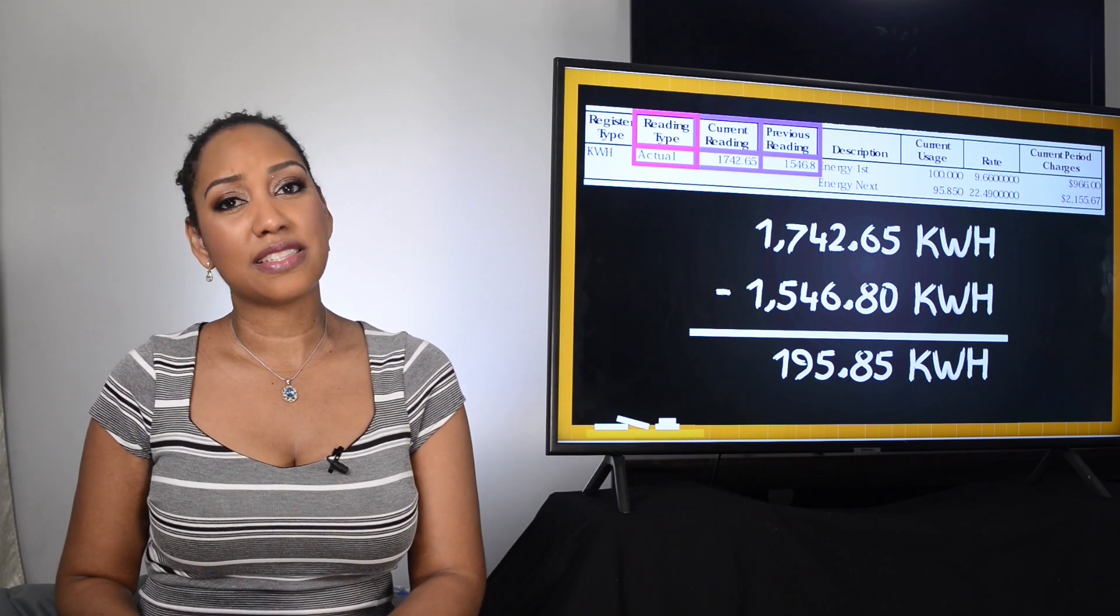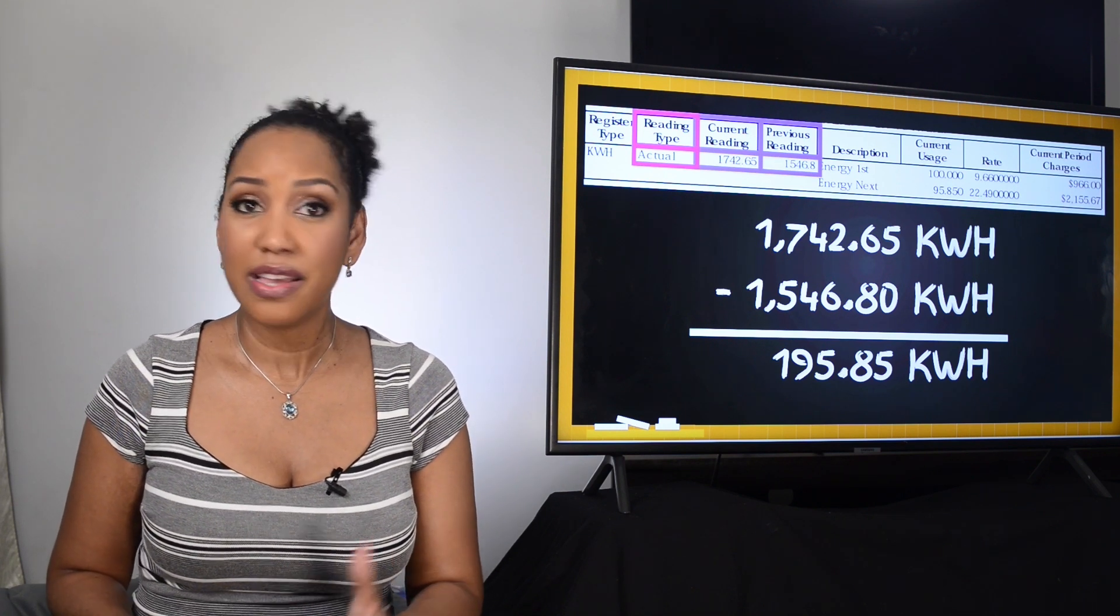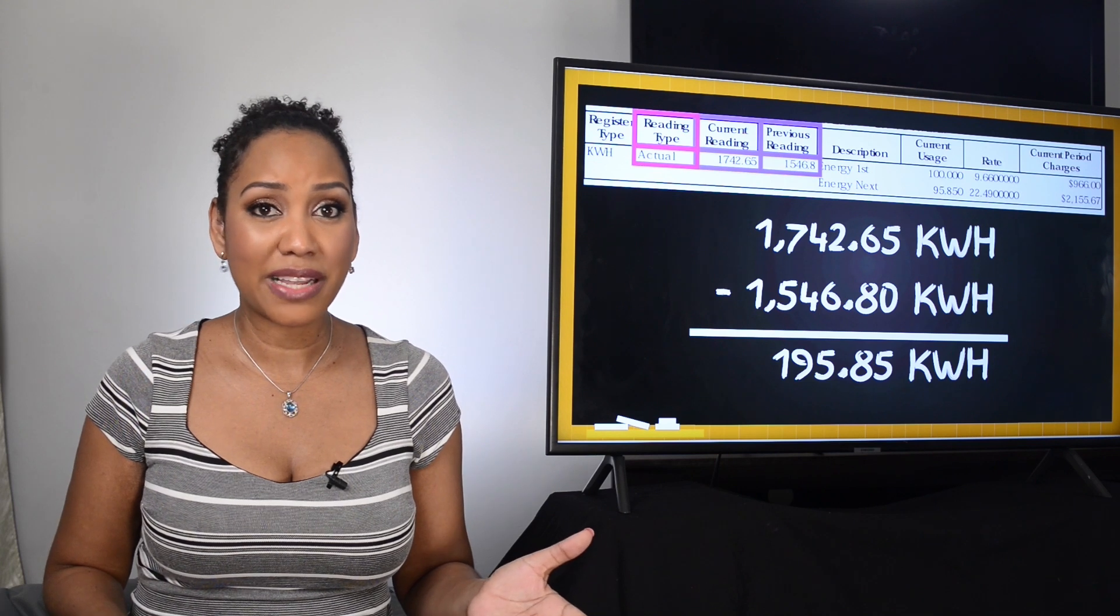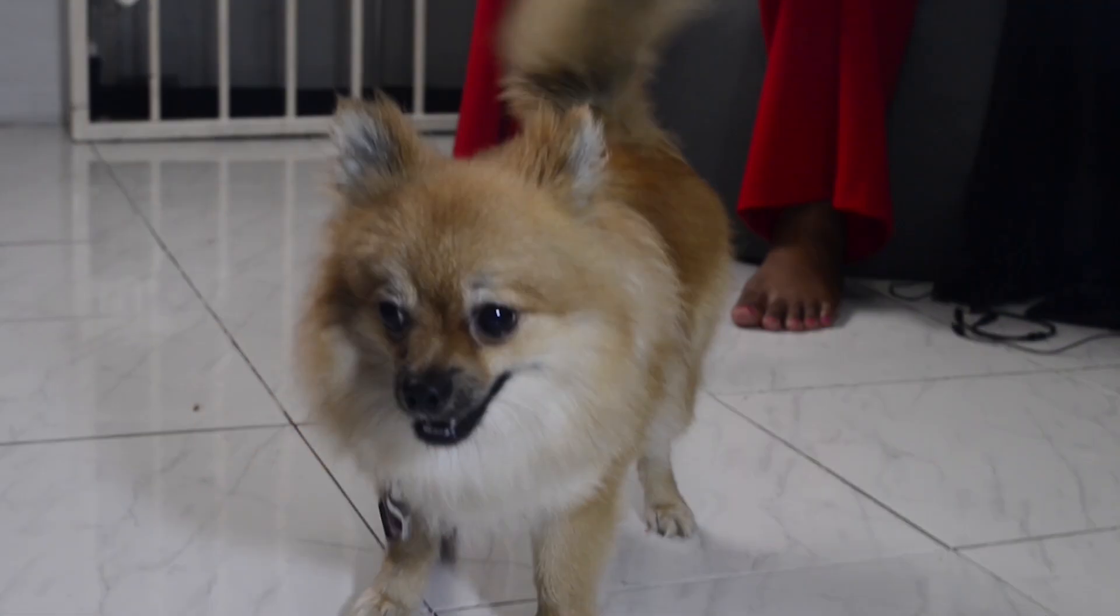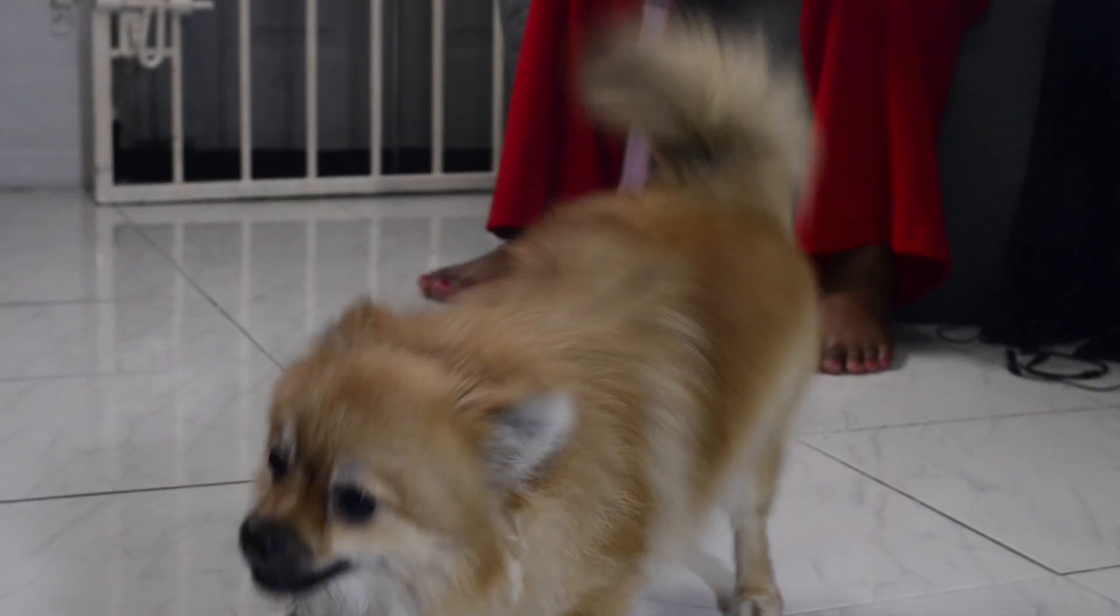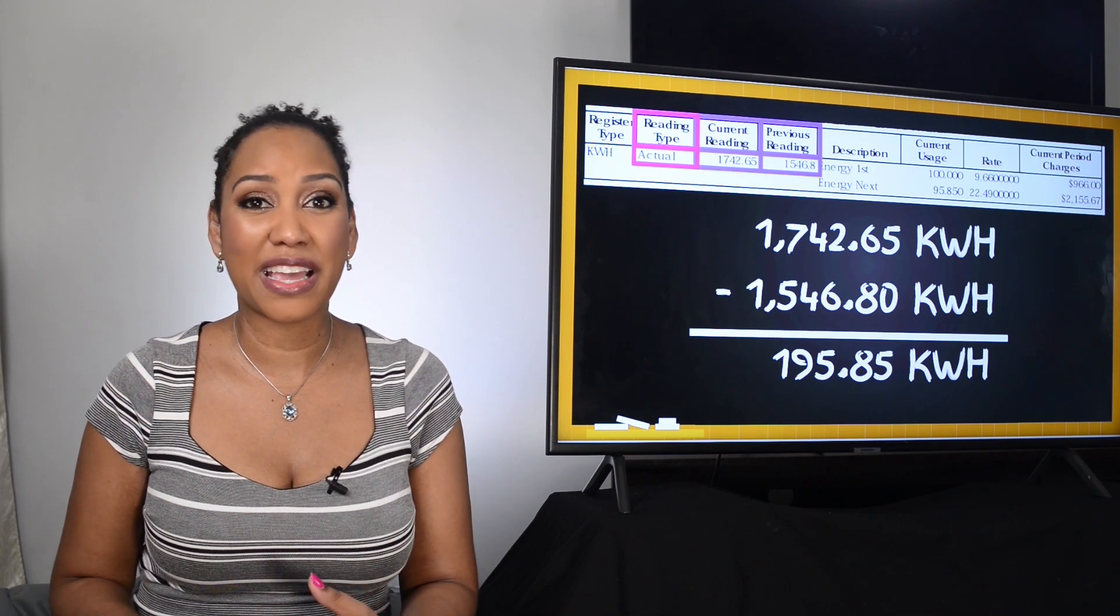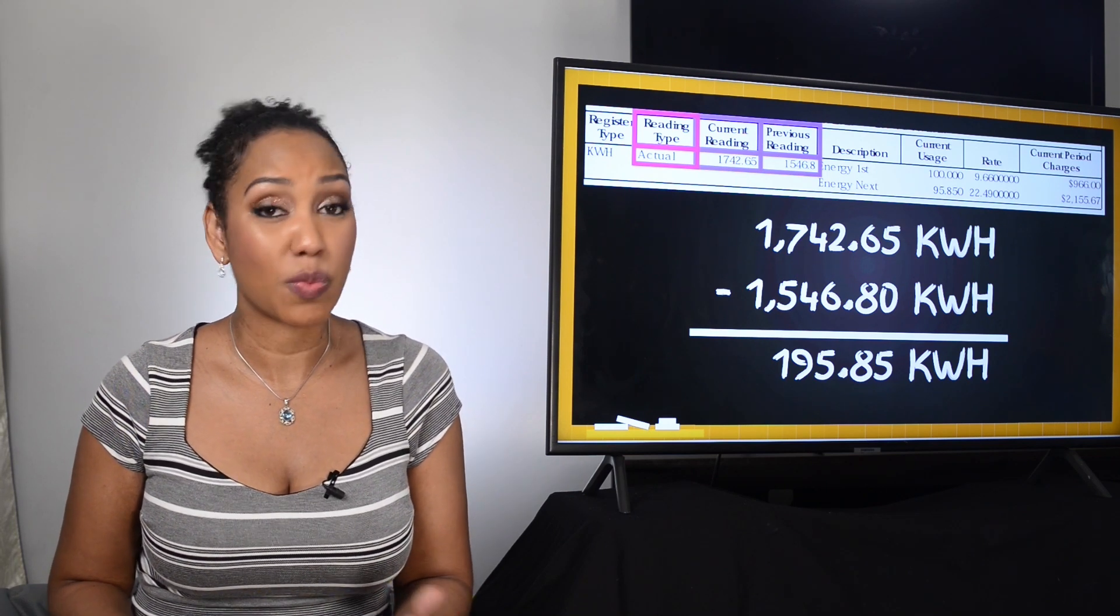Now in some cases a meter reader is not able to get the reading that they need to calculate your bill. Maybe it was difficult to reach your meter, like if you have unrestrained dogs the meter reader may not be able to access it due to safety risks, or if your meter is located inside your house then the meter reader will not be able to take a reading unless you're at home obviously.